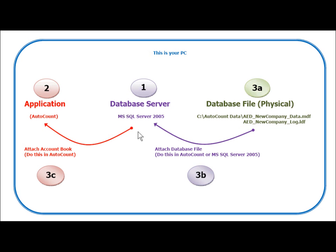Then the system will attach the account book from the database server through the AutoCount accounting system. All these steps are done at the same time — you may not be aware of it. After that, if you create a new account book, the system will repeat steps 3a, 3b, and 3c.